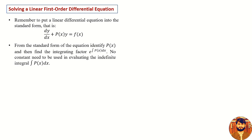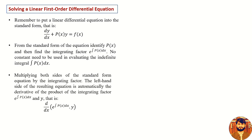The third step is: multiply both sides of the standard form equation by the integrating factor. You need to multiply the integrating factor obtained in the second step to both sides of the standard form equation. The left hand side of the resulting equation is automatically the derivative of the product of the integrating factor and the dependent variable y.